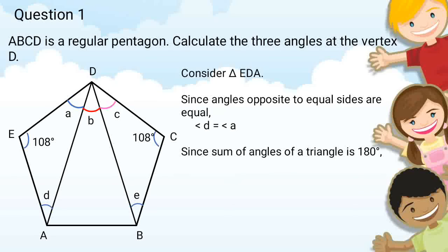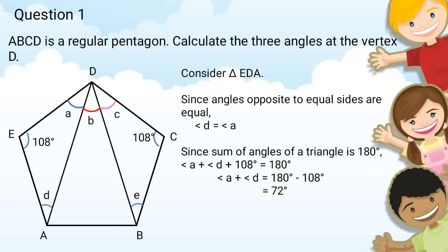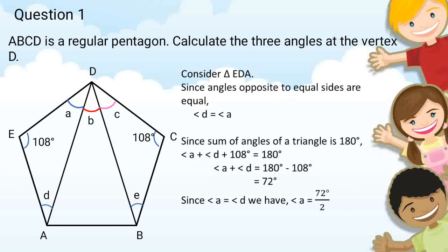Since angles opposite to equal sides are equal, angle a equals angle d in triangle EDA. Since the sum of angles of a triangle equals 180 degrees, angle a plus angle d plus 108 degrees equals 180 degrees, giving angle a plus angle d equal to 72 degrees. Since angle a equals angle d, each is equal to 72 degrees divided by 2, that is 36 degrees.